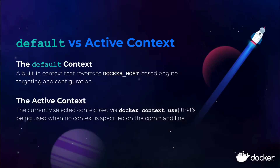Really quickly, I just want to address one point — the difference between the default and the active context. The default context is a built-in context named 'default', it's immutable, and it basically just says use Docker's default behavior and the legacy environment variables like DOCKER_HOST. The active context is the context being used by Docker clients automatically — it's whatever's been set by the Docker context use command. The confusing thing is that the help information for Docker context use mentions that it sets the default context, but what it really means is that it sets the active or current context.